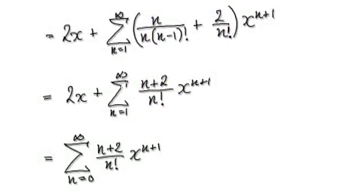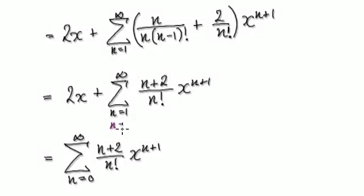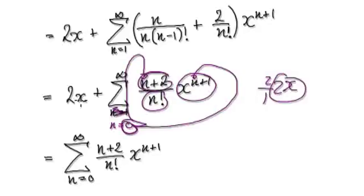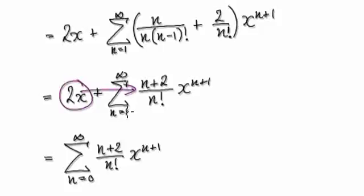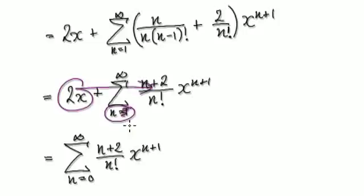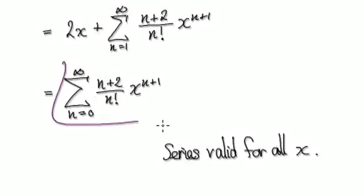Now we still have the 2x term lingering around. When n equals 0 and you put it into the summation: x to the power gives x, the coefficient gives 2, so that generates the 2x term. This 2x is exactly the n equals 0 case of the summation. So push this into the summation and start at 0 rather than 1. The first term will generate 2x, so starting the summation at 0 absorbs that term. This is your final series, and it's valid for all x.